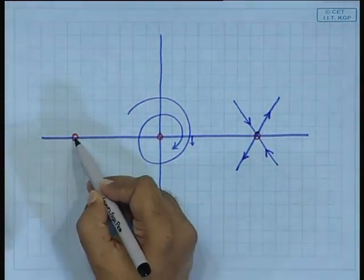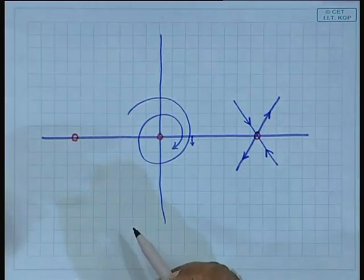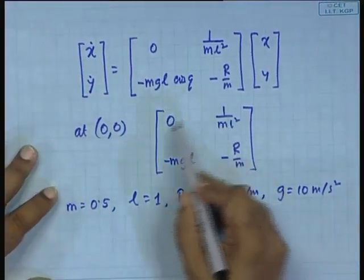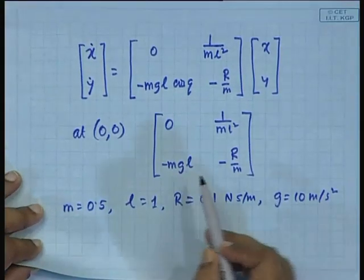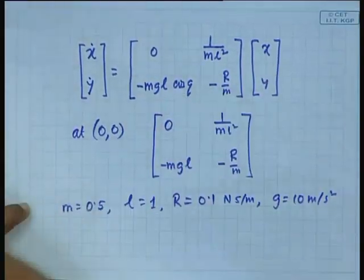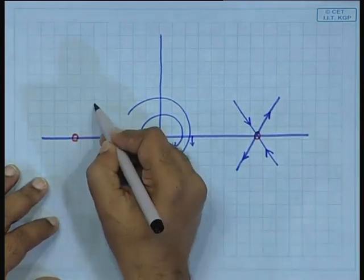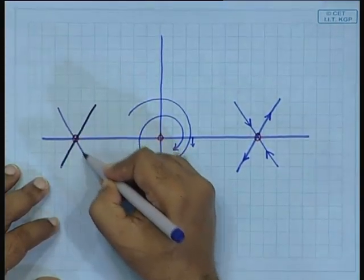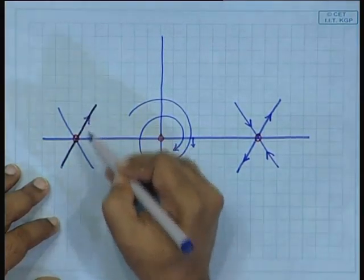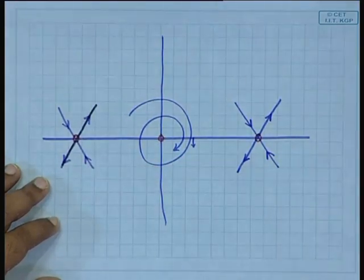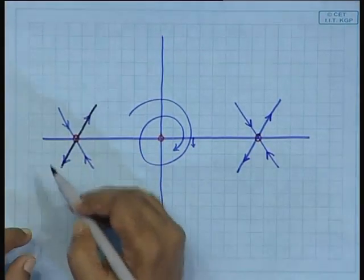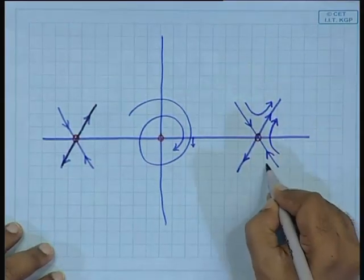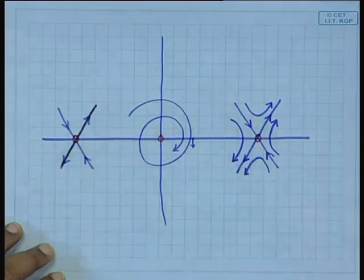Similarly, from symmetry, the equilibrium point at (−π, 0) will also be a saddle. Why? Because the Jacobian expression — if you substitute +π and get something, then −π will give the same thing since cos appears. So we can see that this will also be a saddle. The whole structure will repeat, with another equilibrium point at (2π, 0) and another at (−2π, 0).